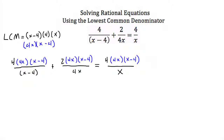These two terms equal 4 times our lowest common denominator of 4x times x minus 4, over x. Looking at our first term, we have x minus 4 in the numerator and x minus 4 in the denominator — these cancel. In the second term, 2 times 4x times x minus 4 divided by 4x — the 4x in the numerator and denominator cancel. On the right-hand side, 4 times 4x times x minus 4 divided by x — the x's cancel.